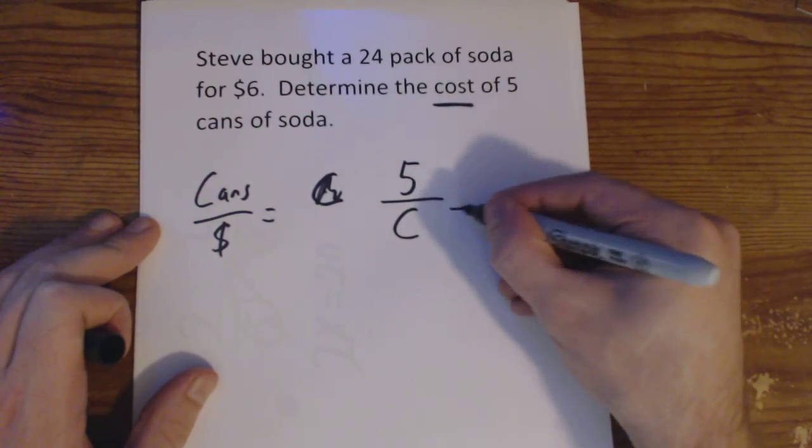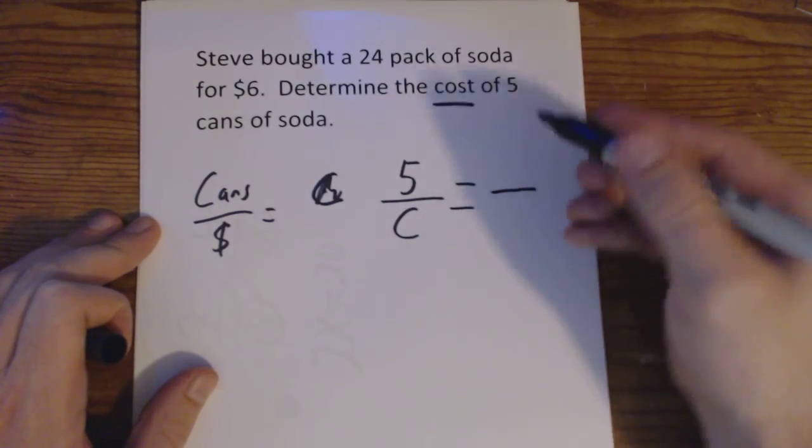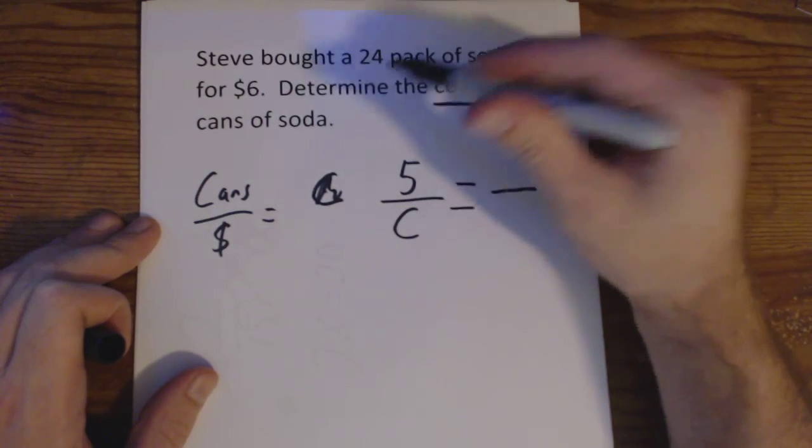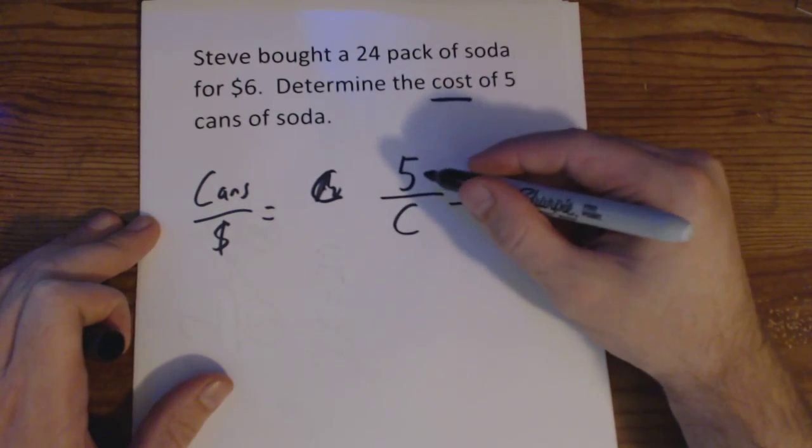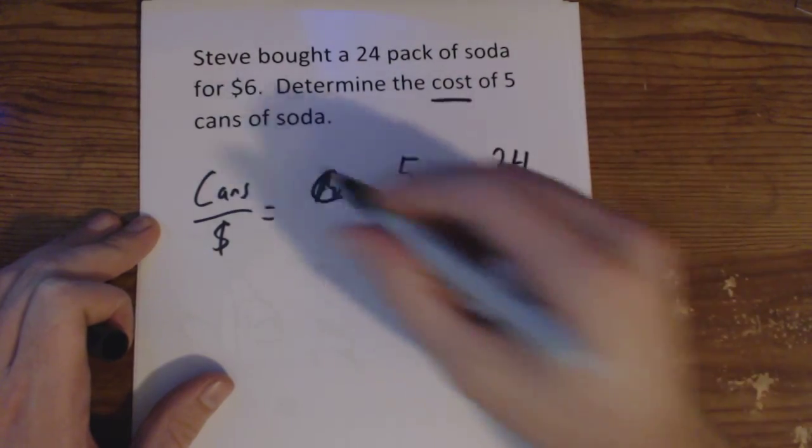Now we're going to set this up as a proportion, which means we're going to set it equal to something. So let's go back to the problem. We know that the cost for 24 cans was $6. So five cans, we want to find the cost. 24 cans cost $6.